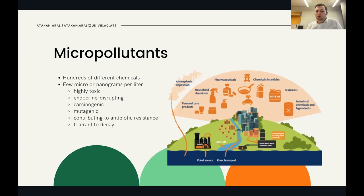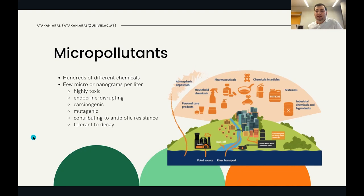We are focusing on a specific kind of pollutants called micropollutants. They come from extensive use of chemicals in daily life, such as personal care products and household chemicals. Many studies confirm these chemicals are present in rivers more than expected, with hundreds of chemicals found in surface water around the world. They are called micropollutants because they have very low concentrations — just a few micro or nanograms per liter.